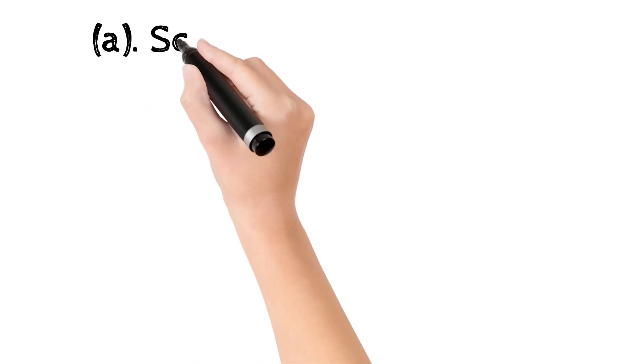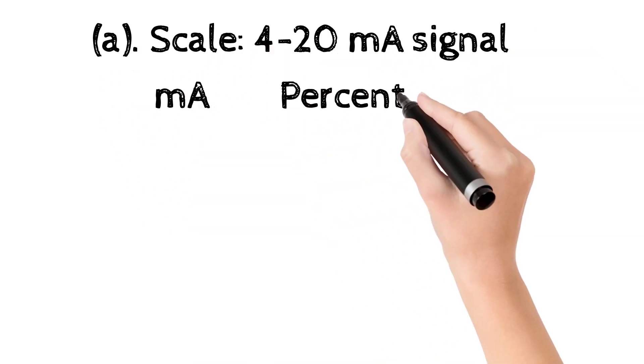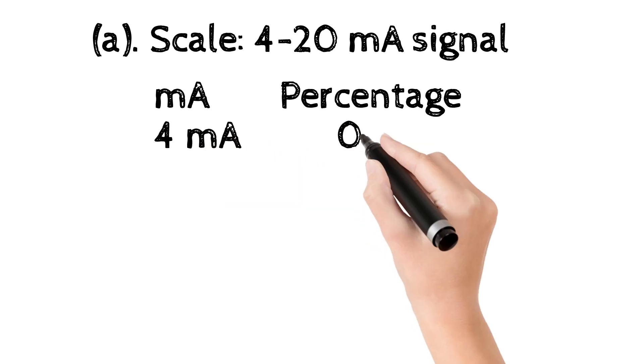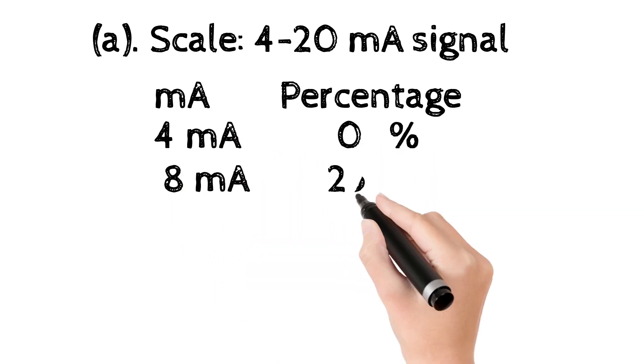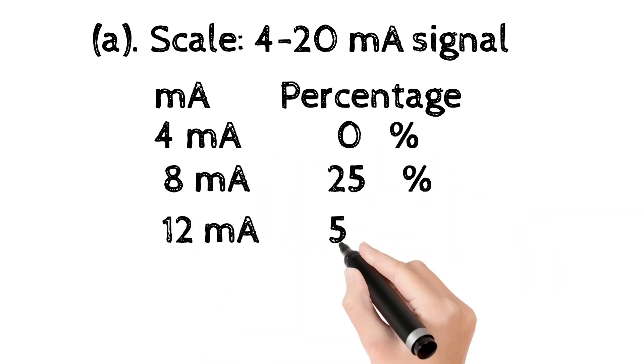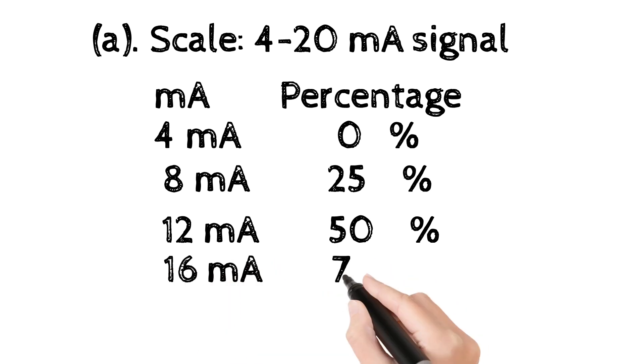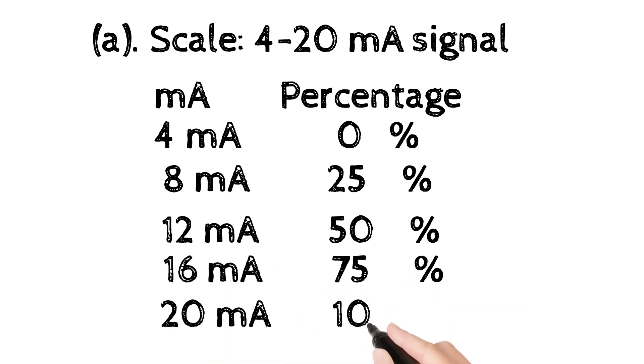2A. Scale 4 to 20 mA signal. mA percentage: 4 mA 0%, 8 mA 25%, 12 mA 50%, 16 mA 75%, 20 mA 100%.